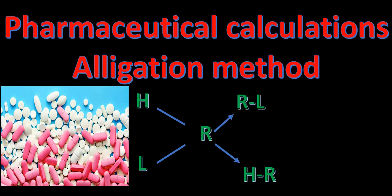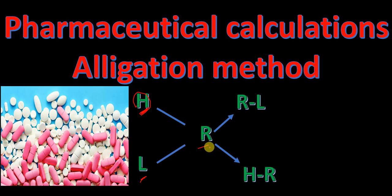Hello everyone. In this lecture today I'm going to talk to you about pharmaceutical calculations using the allegation method. I'm going to show you multiple examples. Here I have shown the schematics of the allegation method: you put the higher concentration here, the lower concentration here, and in the middle the required concentration. On one side is required minus lower, and on the other side is higher minus required.